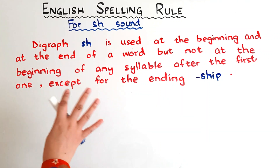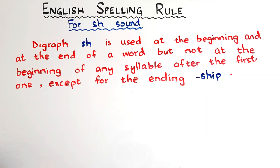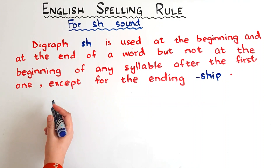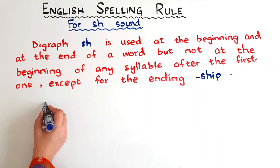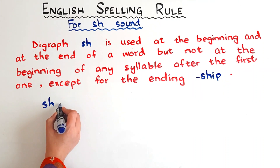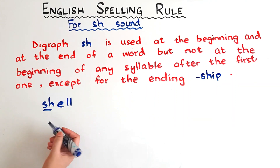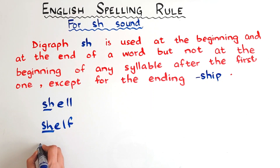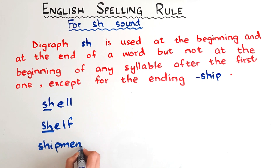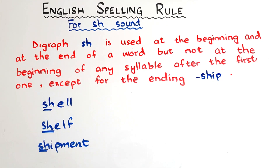So before I read this rule to you, let me explain it a little. This rule says that if you hear the SH sound at the beginning of a word — like in 'shell,' where SH is at the beginning, or the word 'shelf,' or the word 'shipment' — if you hear the SH sound at the beginning of a word, write the SH sound with SH.